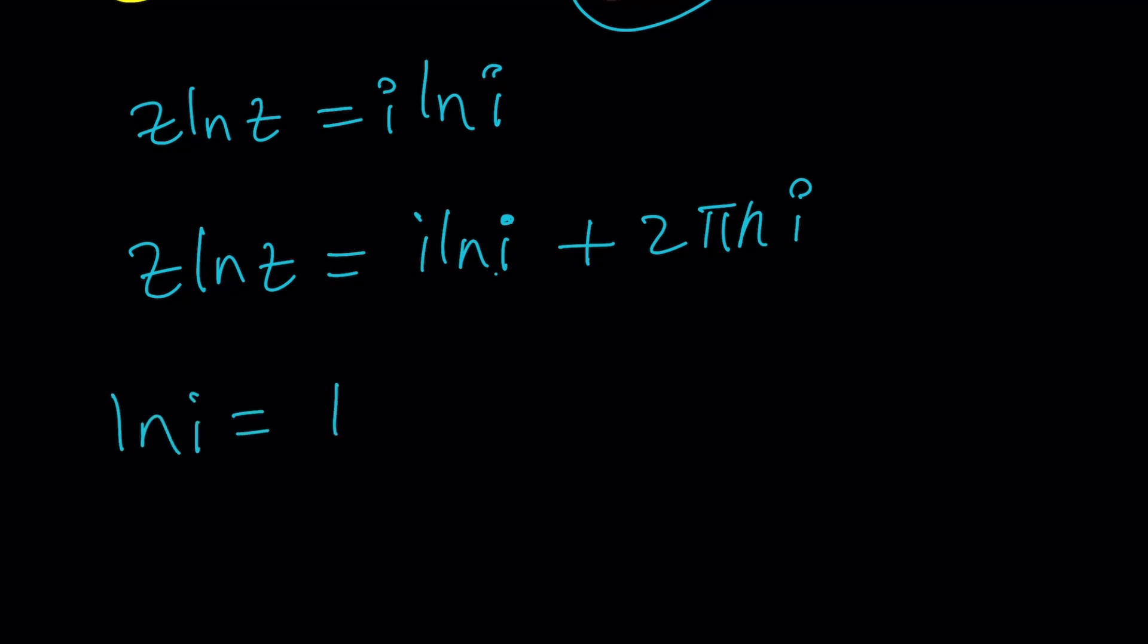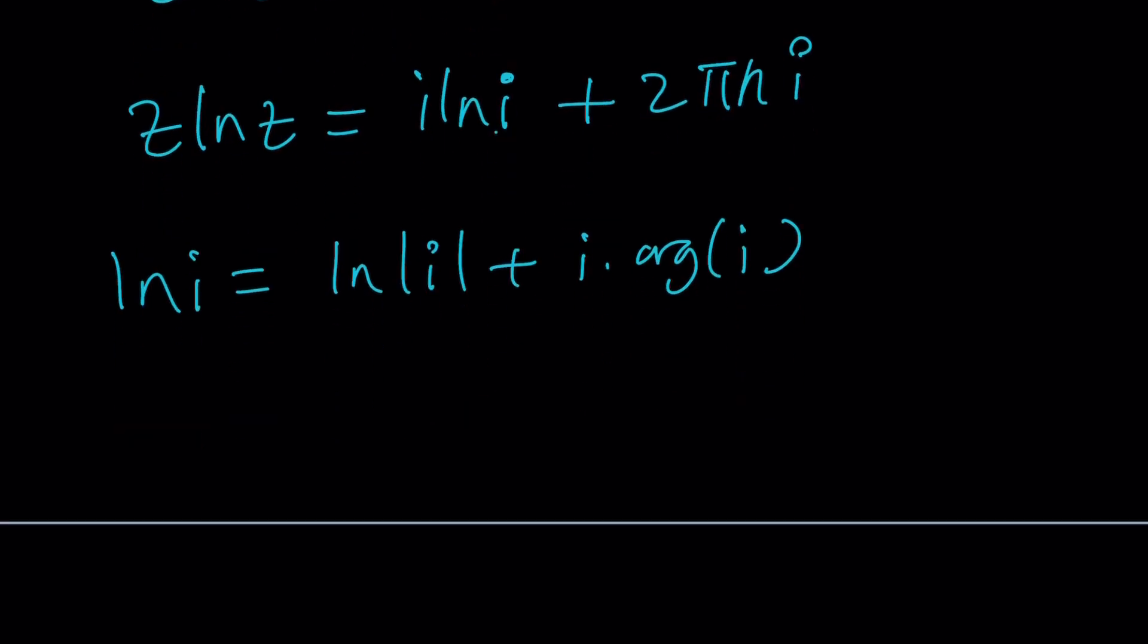What is ln i? ln i is ln absolute value of i plus i times the argument of i. Absolute value of i is 1, so this is 0 because that's real. The argument of i is pi over 2, so ln i should be something like i pi over 2.